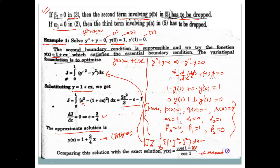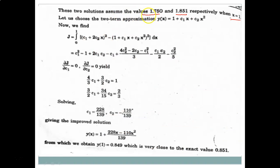At x = 1 the two solutions give values of 1.851 (exact) and 1.75 (approximate), showing a noticeable difference. To make the approximate solution closer to the exact solution, we can choose an approximate function involving more than one arbitrary constant, as explained in the Rayleigh-Ritz method discussion.